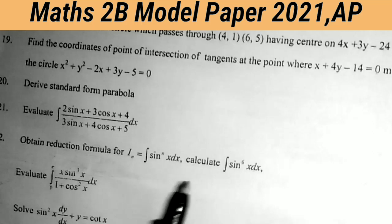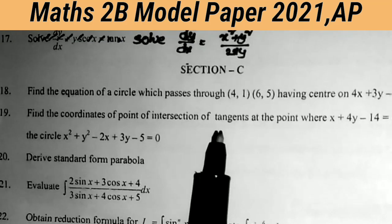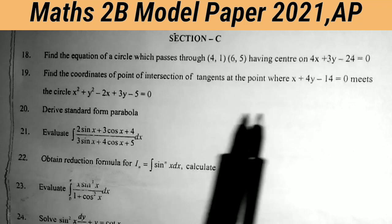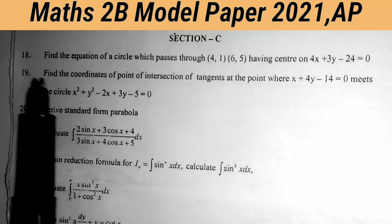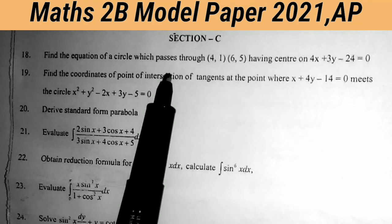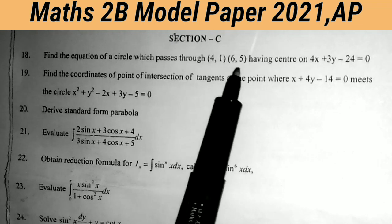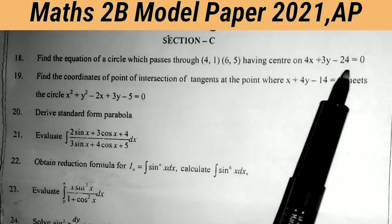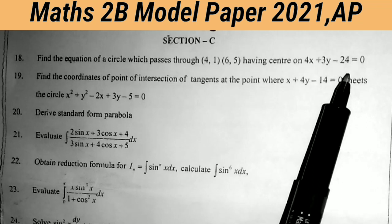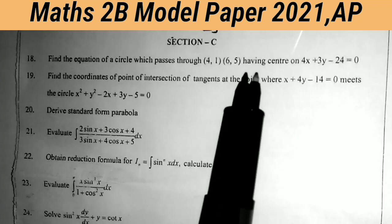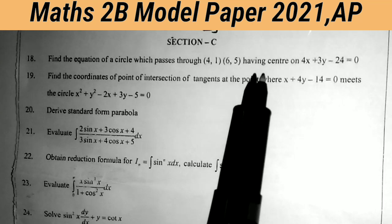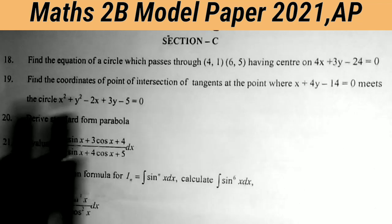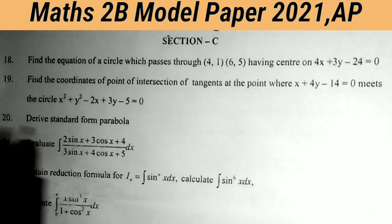Now coming to Section C. Section C also has 7 questions and we must attempt only 5, each carrying 7 marks. Eighteenth question: find the equation of the circle which passes through the points (4, 1) and (6, 5) with center on the line 4x + 3y − 24 = 0. This is very very very important — the first essay question will be from equations of circles passing through 3 points or this type of problem.